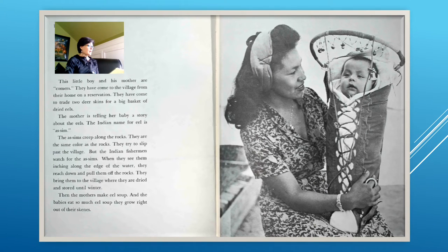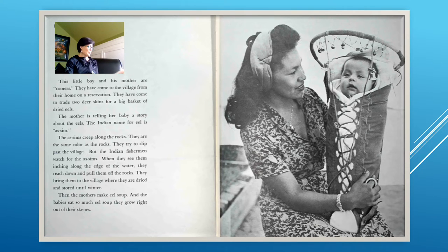This little boy and his mother are comers. They have come to the village from their home on a reservation to trade two deerskins for a big basket of dried eels. The mother is telling her baby a story about the eels. The Indian name for eel is Asim. The Asims creep along the rocks — the same color as the rocks. The Indian fishermen watch for the Asims and pull them off the rocks, bringing them to the village to be dried and stored until winter for eel soup.